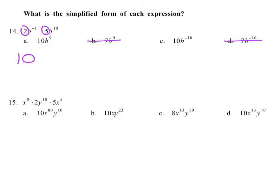You should also know that when you're multiplying powers with the same base, b^-1 and b^10, we're going to add those exponents together. What is -1 plus 10? It is 9. So you get 10b^9.